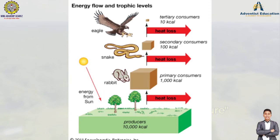You can see this illustration in your module. The producers contain the full amount of energy received from the sun. These producers — plants, green grasses, and trees — can produce their own food because they can perform photosynthesis. The energy they receive is the full amount of energy from the sun. For example, these producers contain 10,000 kilocalories — kilocalories being a unit of energy. The first or primary consumer here is the rabbit.